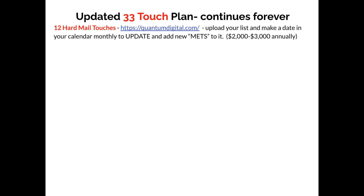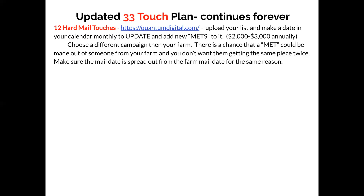In the 33 Touch plan, the first thing is we are going to work on setting up 12 hard mail touches, recommending you use Quantum Digital, which will handle your direct mail. We're also going to do email touches. The neighborhood nurture, which we set up in week two, you'll choose whether to touch them once a month or twice a month — it becomes totally mechanized, going out 12 to 24 times a year without you having to think about it. It tells people what their neighbors are doing, what their house is worth — valuable information.